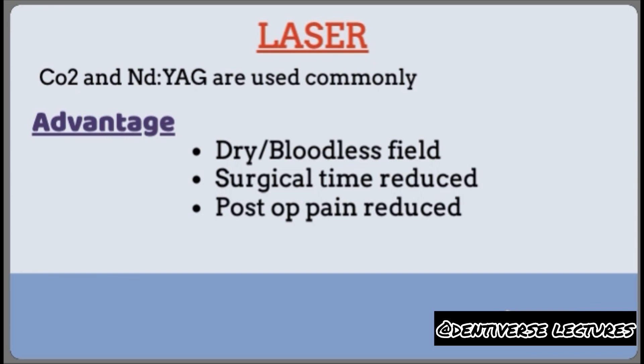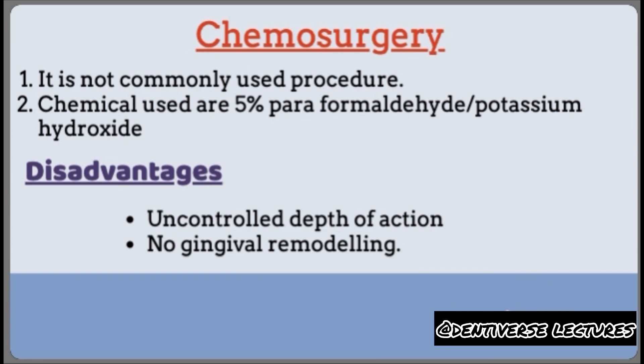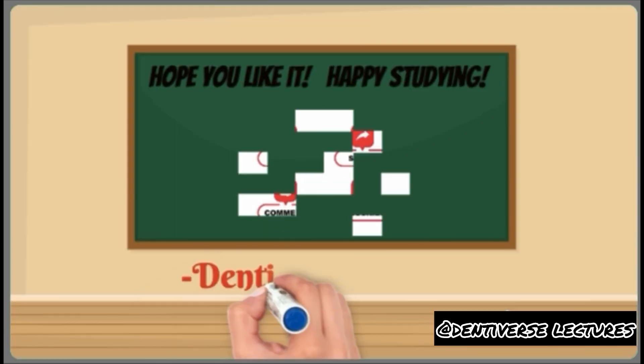The third type of gingivectomy is laser. Advantages include a dry, bloodless field, reduced surgical time, and reduced postoperative pain. The fourth gingivectomy procedure is chemosurgery, in which 5% paraformaldehyde or potassium hydroxide is used. Disadvantages are: healthy tissue can be injured due to poor control, and there is no gingival remodeling.